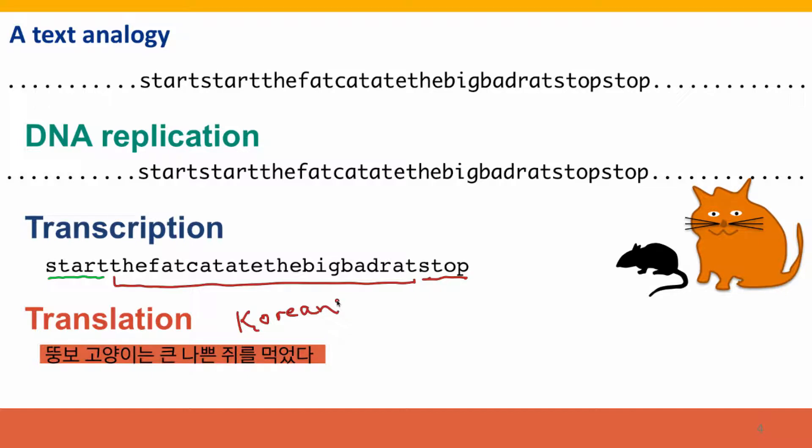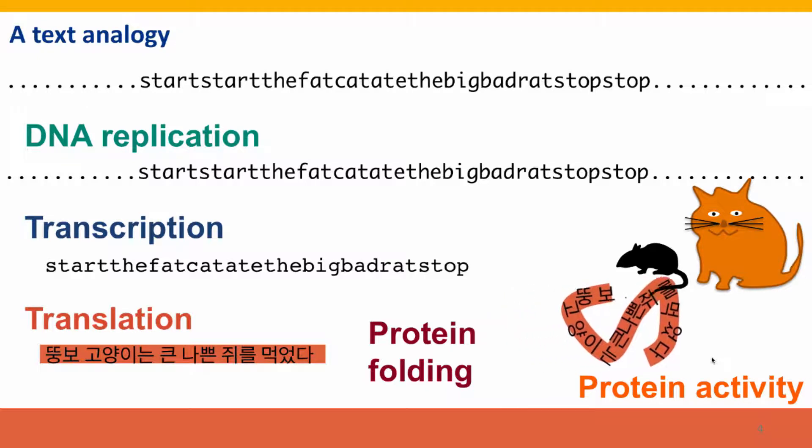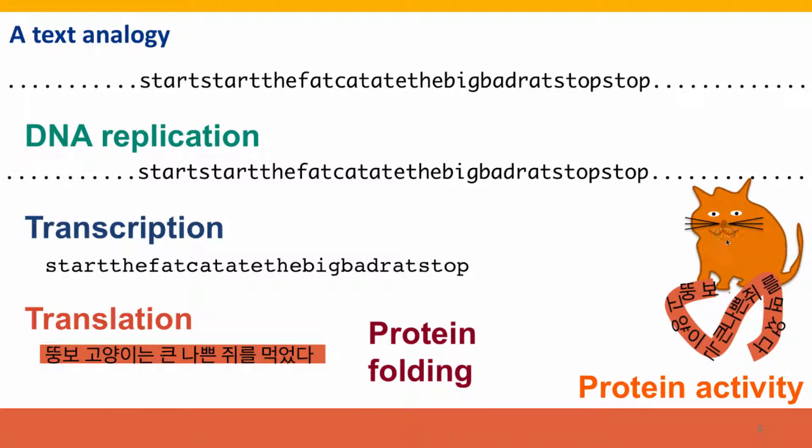I extended this analogy beyond translation to include protein folding. There's our Korean protein, Korean text folded up, and to include the activity of the protein. In this case, our sequence instructs the cat, who's fat, to eat the big bad rat. I know it's cute.